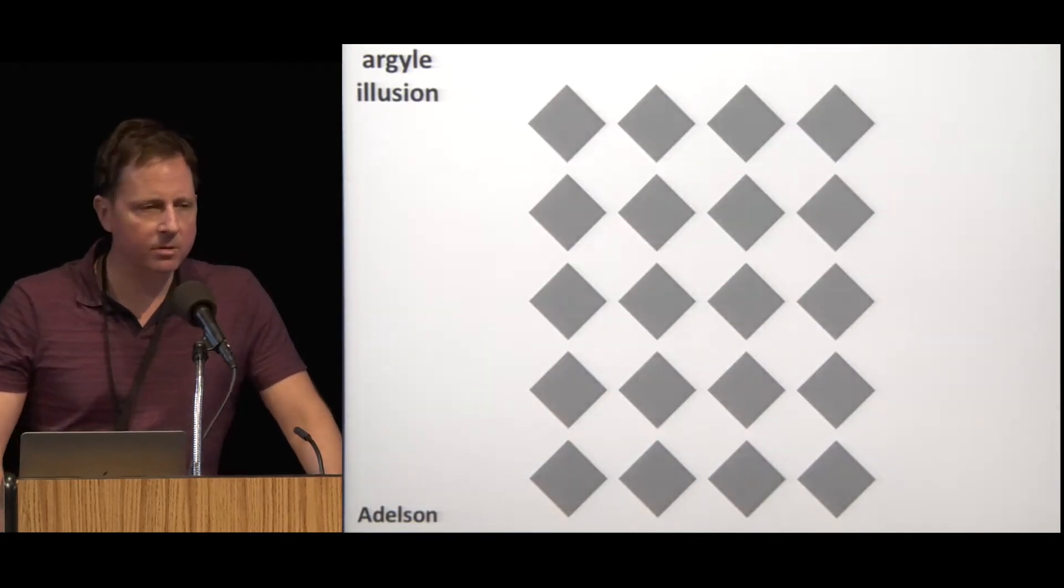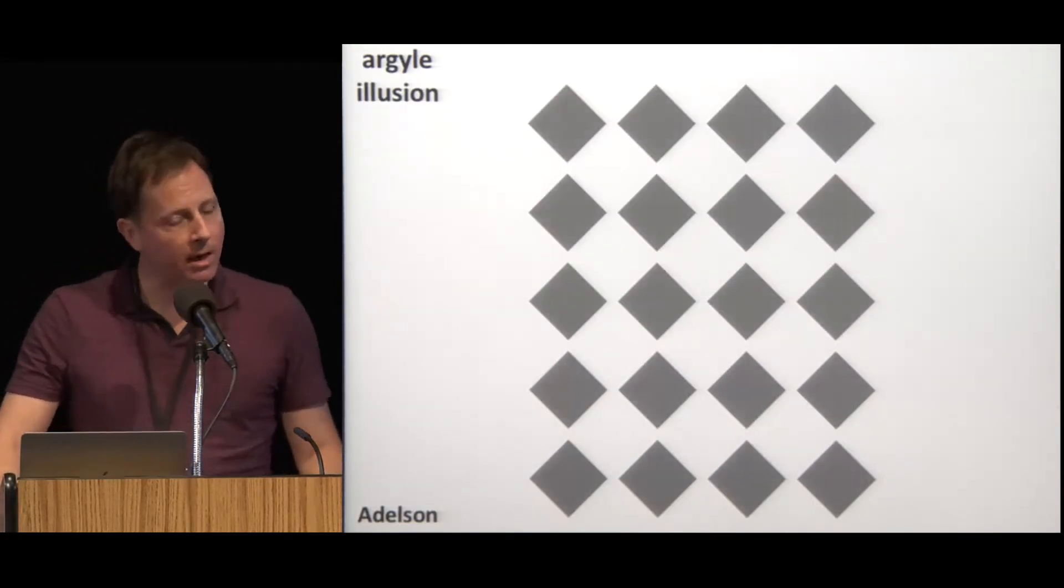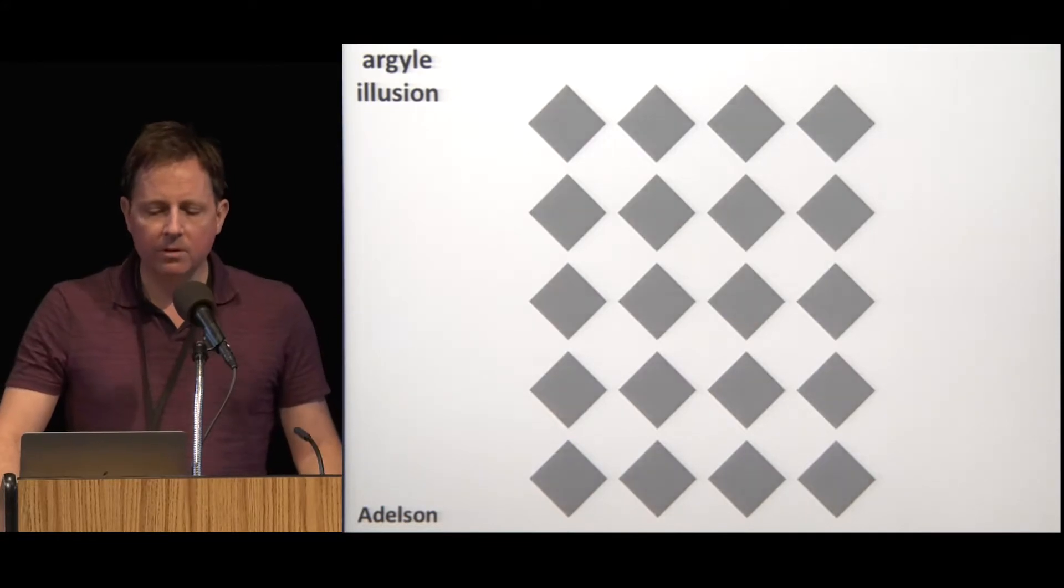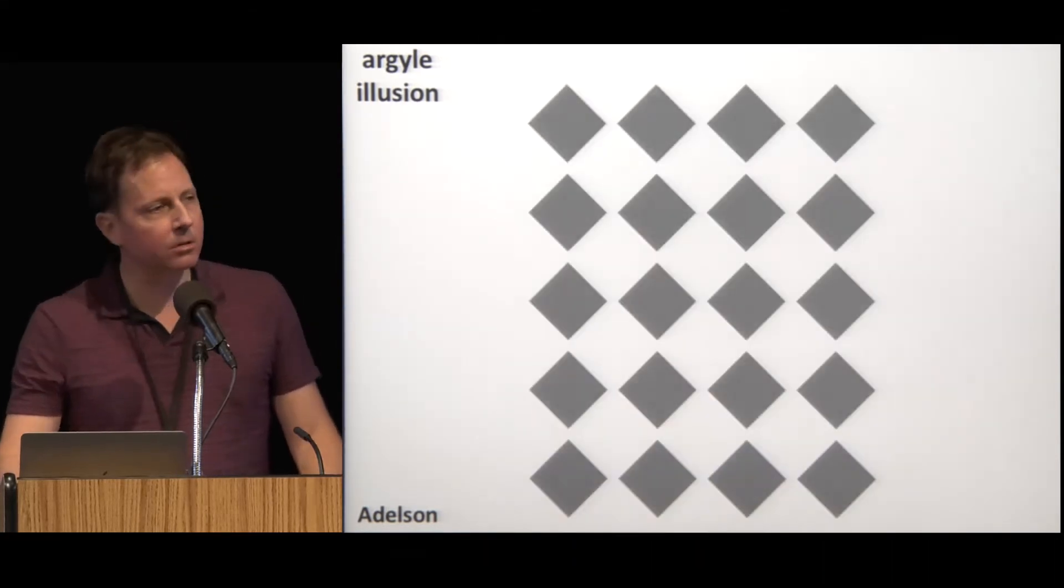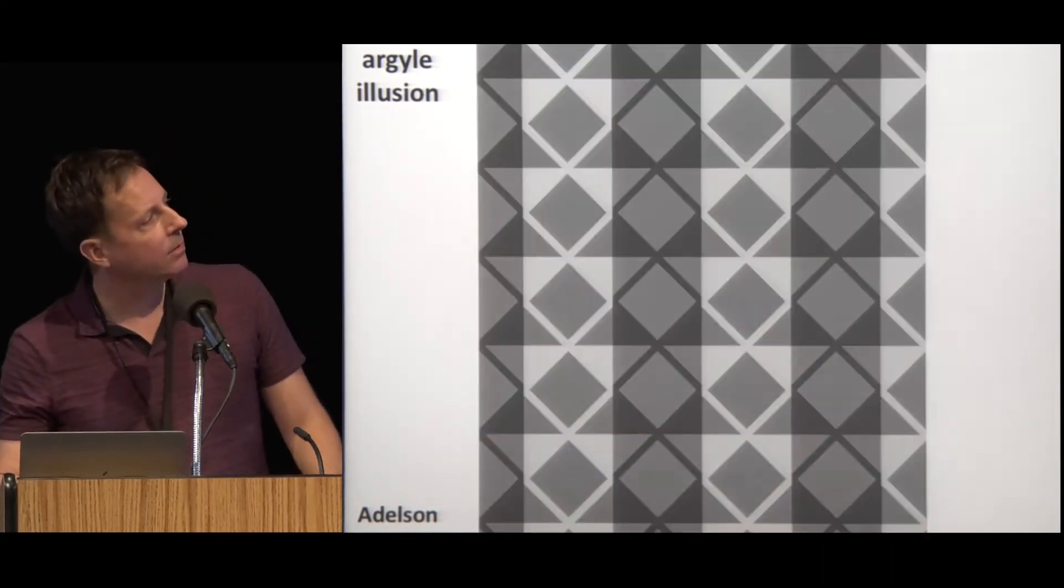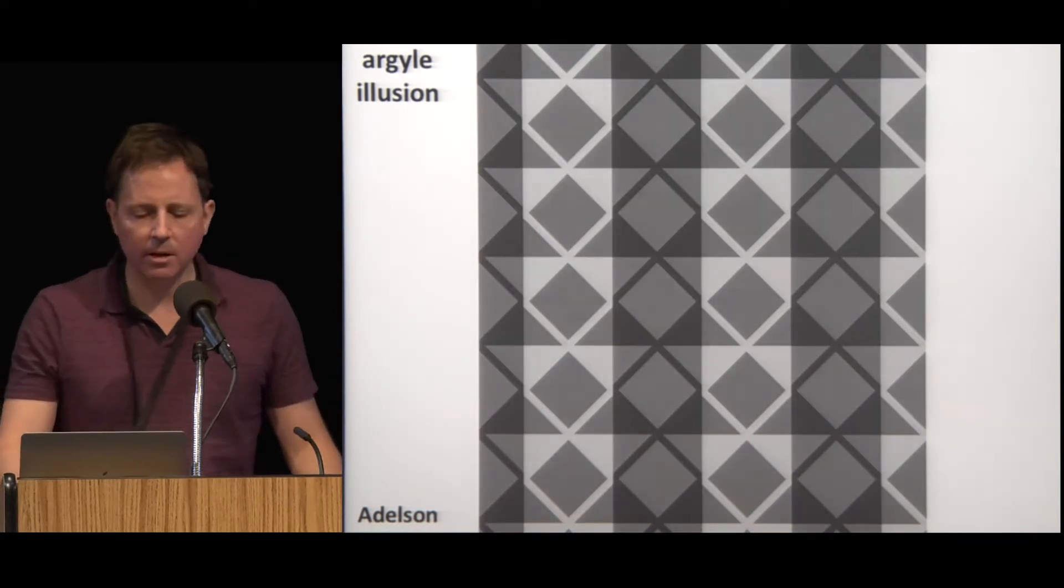The experiments that I'm going to talk about today will use the Argyle illusion. Here all the diamonds are physically identical, but in context the columns of diamonds look very light and very dark. Again, here are the diamonds alone, here they are in context, some look very light, some look very dark.